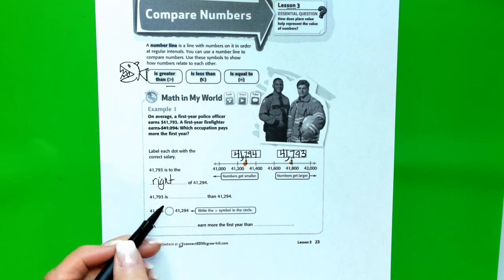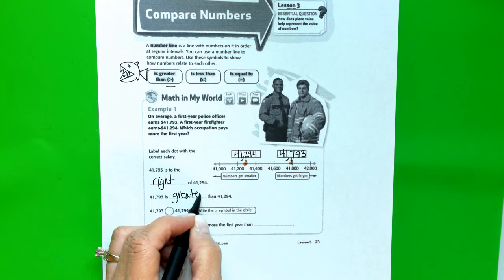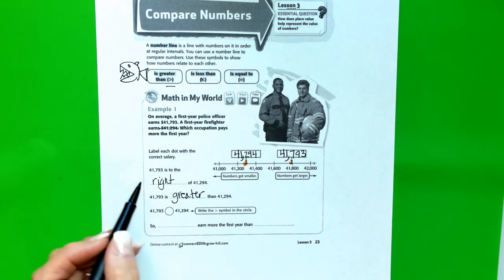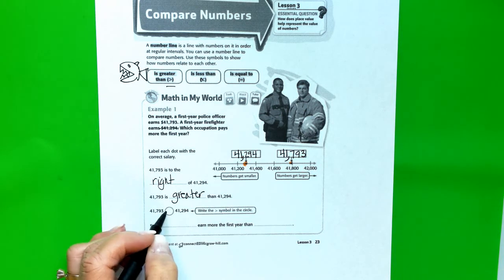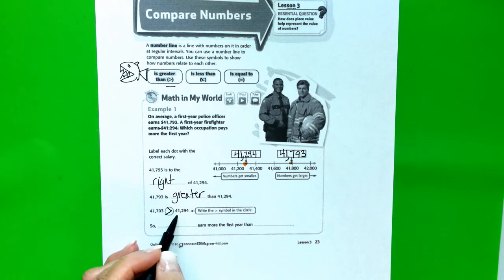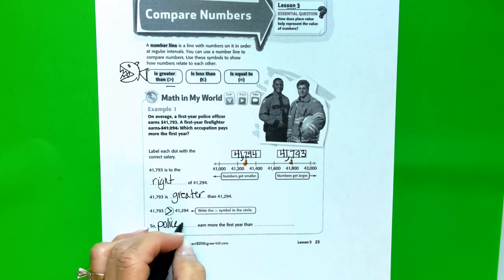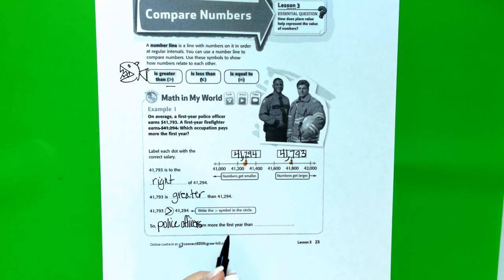$41,793 is greater because the numbers, as they move to the right, get larger. So, we can use our mathematical symbol to say that $41,793 is greater than $41,294. And that's what we did. They said write the greater than symbol in the circle. So, police officers earn more the first year than our firefighters.